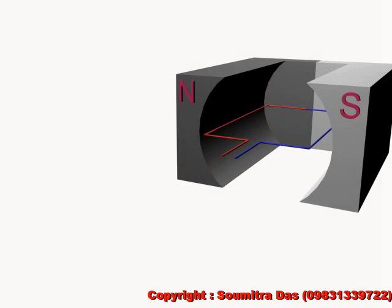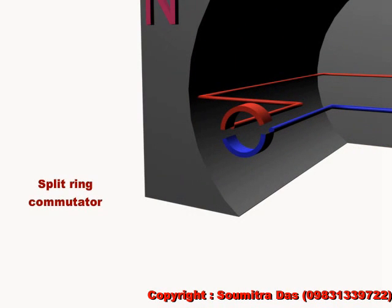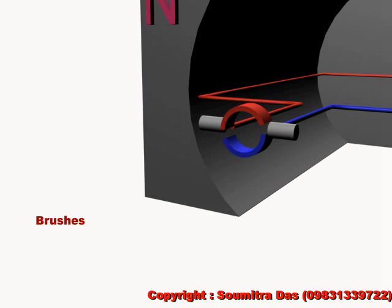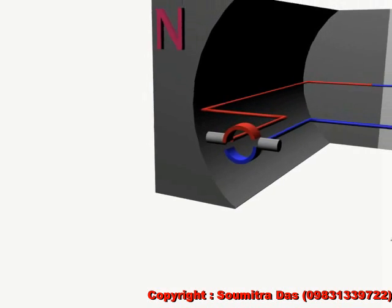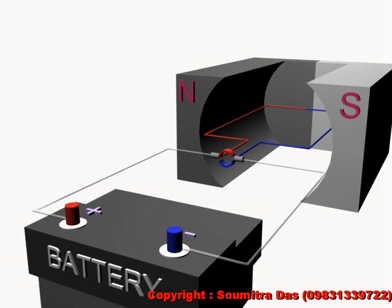A split ring commutator made of metal. Its function is to reverse the current direction after every half rotation. Graphite rods called brushes which are in contact with the split rings. A battery and connecting wires connected to the brushes.